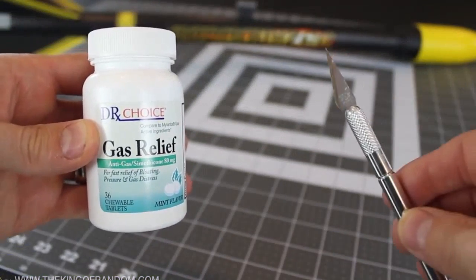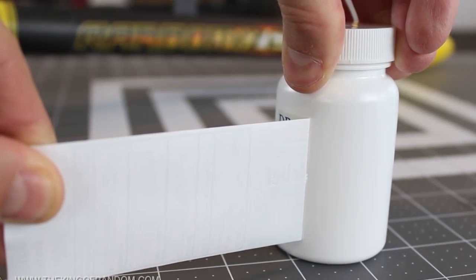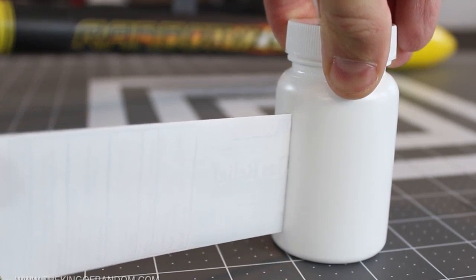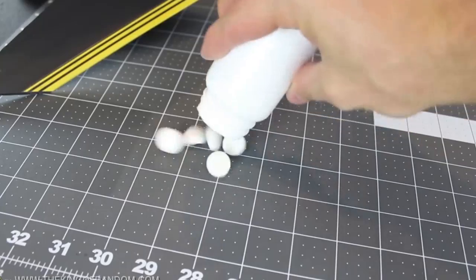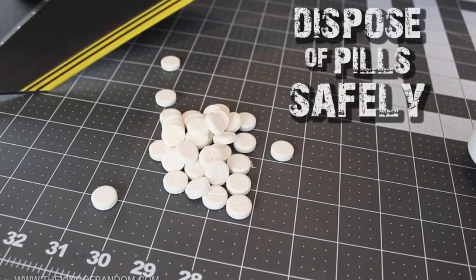Alright, with the nose cone drying, let's move on to modifying the plastic pill bottle next. You can find these bottles at your local super center for around 88 cents, and if you pull the label slowly and carefully enough, you should be able to get it off without leaving any sticky residue behind. Now we're only after the empty bottle here, so unless you're having issues with gas, go ahead and get rid of the pills any way you think is safe.